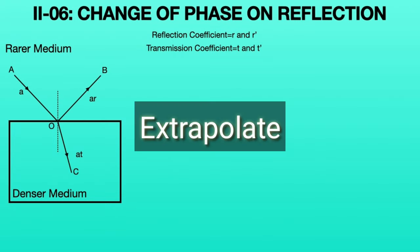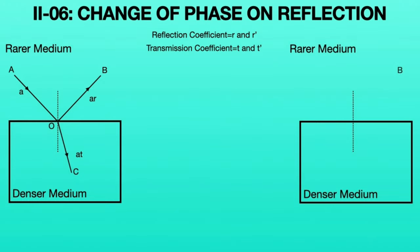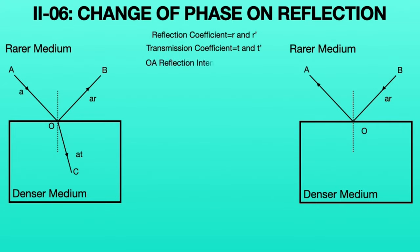Now, extrapolate the rays OB and OC in the reverse direction, and observe what happens in the right side animation. When considering two mediums, the light ray coming from B is incident on the denser medium surface at O, with intensity AR. This ray BO splits into two light rays at O. One ray reflects along the direction of OA, so the intensity of ray OA is AR × r = AR².